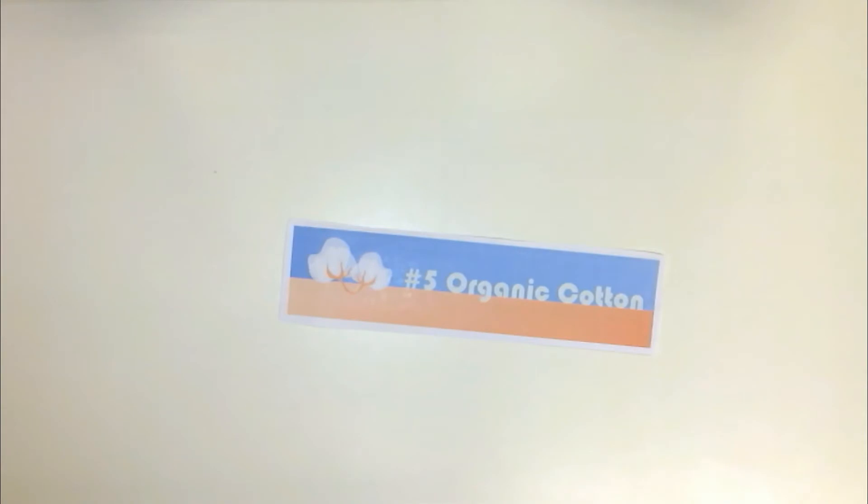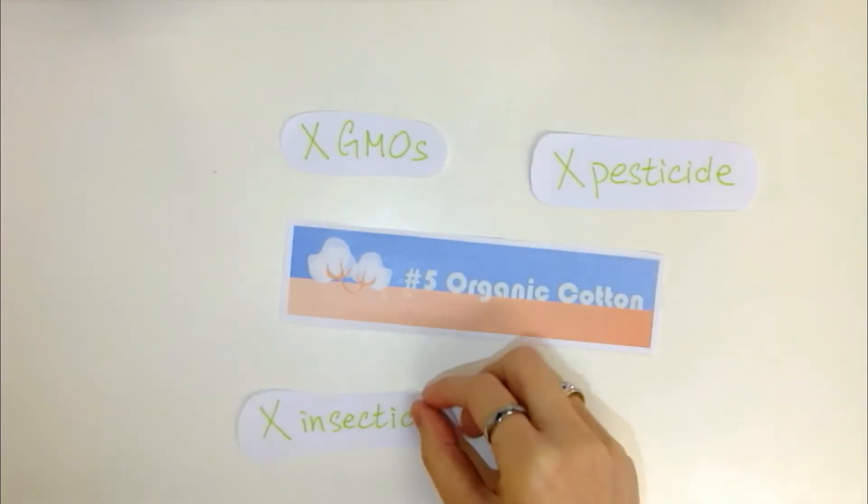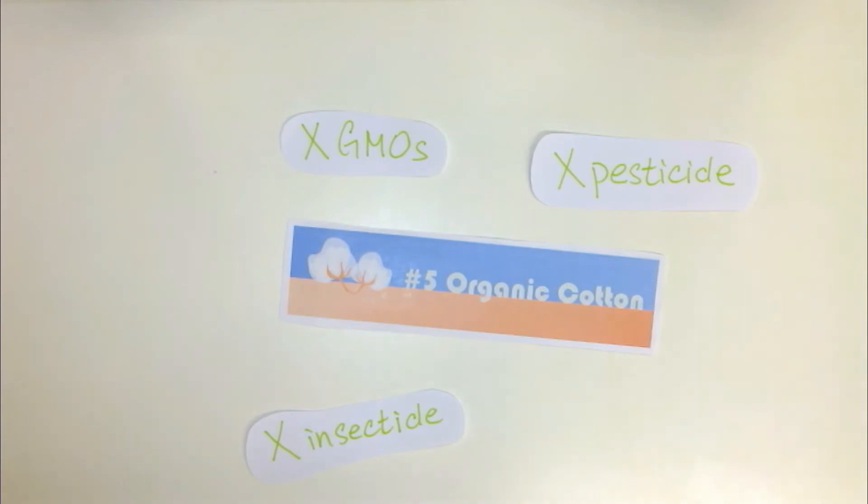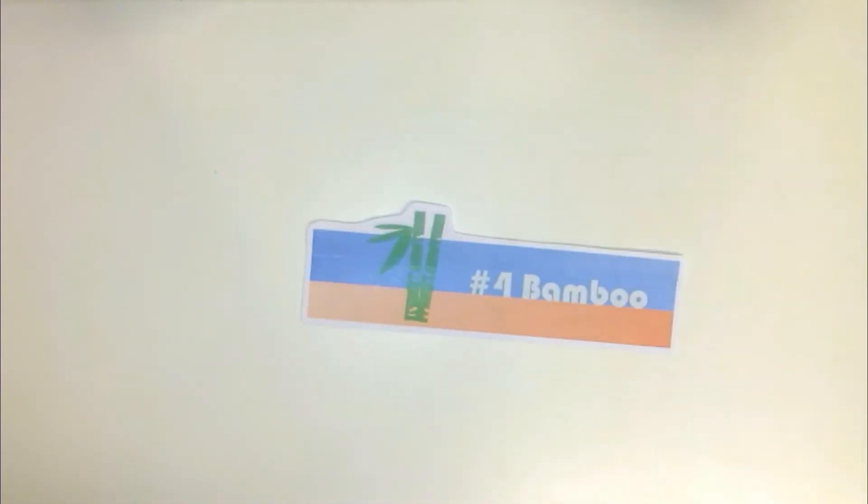Number 5: Organic Cotton. Organic cotton is harvested without the use of GMOs, pesticides, insecticides, or any chemicals that could possibly harm the environment. This fiber is low-priced and is also biodegradable.